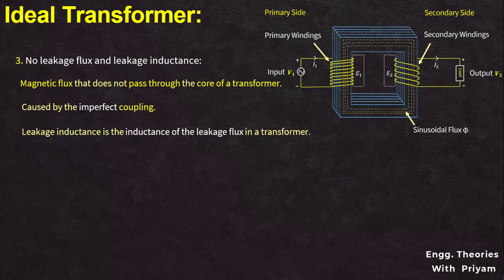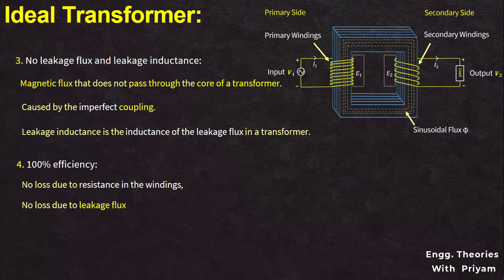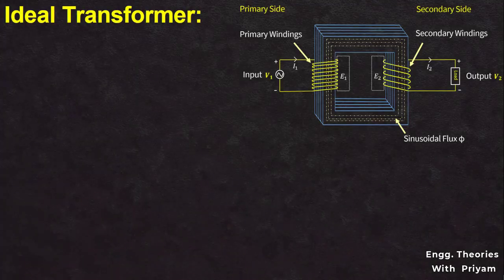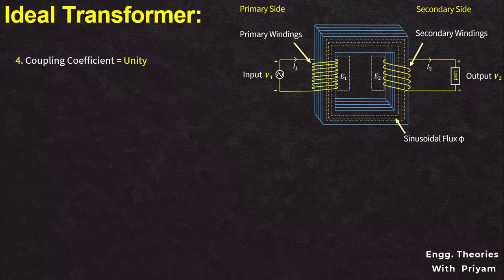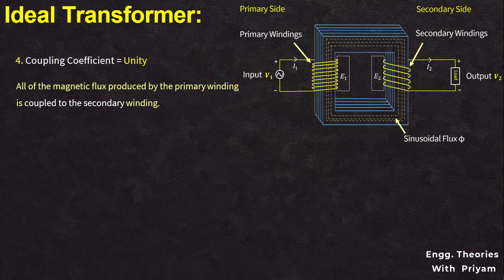Another characteristic of the ideal transformer is 100% efficiency, because an ideal transformer has no losses — no resistive winding losses, no leakage flux losses, no hysteresis losses, and no eddy current losses in the core. Another characteristic is unity coupling coefficient, meaning all of the magnetic flux produced by the primary winding is coupled to the secondary winding, with no flux leakage.